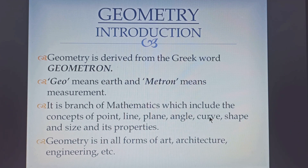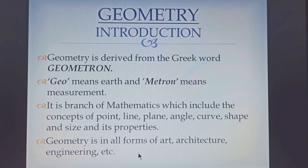We find geometry in different fields like art, architecture, engineering, etc. Like you can see many ancient buildings and monuments which are of different shapes. We can also find geometry all around us. The things which are around us are made up of some shapes and they have got some properties. All this study of things of shape and size comes under geometry.